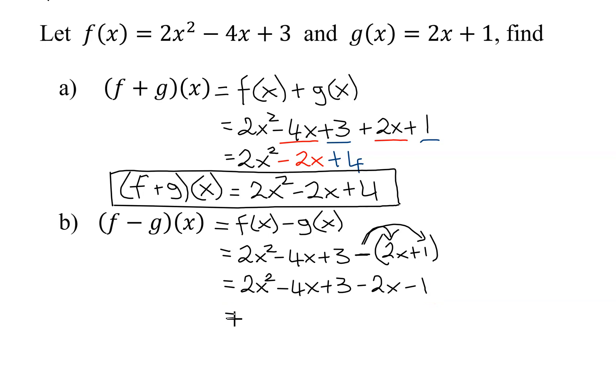So now all I have to do is simplify. Do I have any like terms that go with 2x squared? No. So I'm going to get 2x squared. Then minus 4x minus 2x is negative 6x. And finally, my constant difference function 3 minus 1 is 2.